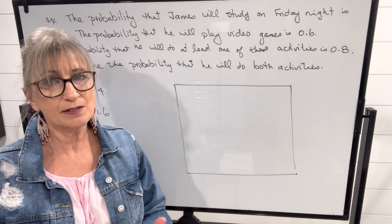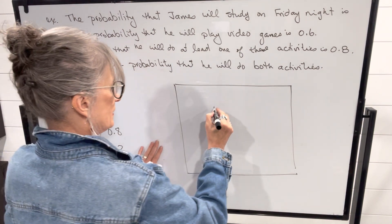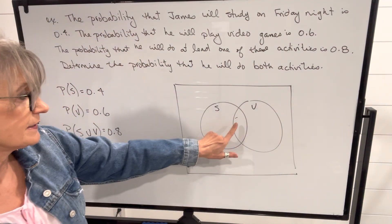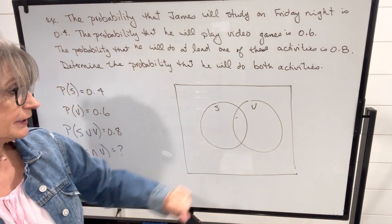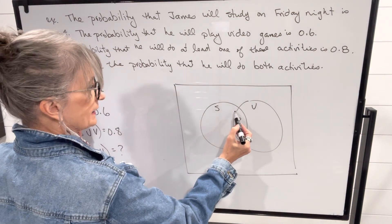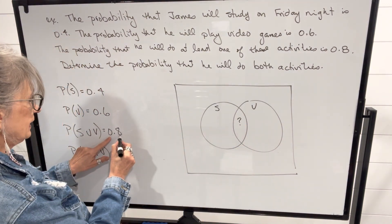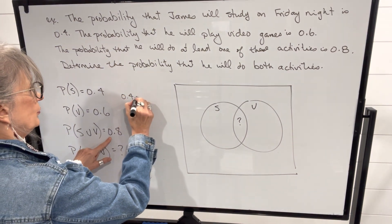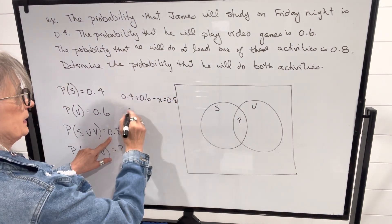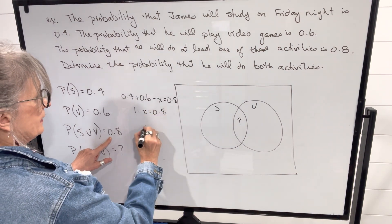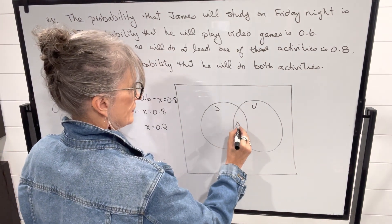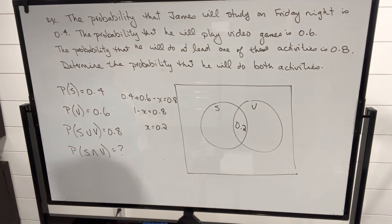These two events are not mutually exclusive because he might study and play video games. Our two circles represent studying and video games, and we know he could do both — that intersection is what we're trying to find. Using the formula, this plus this minus the intersection equals 0.8, so 0.4 plus 0.6 minus x equals 0.8. That gives 1 minus x equals 0.8, and therefore x equals 0.2. So the probability of doing both is 0.2.